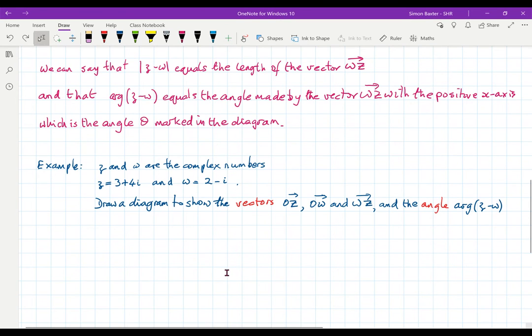Now let's have a look at this example. If I have two complex numbers Z and W where I take Z to be 3 plus 4i and W to be 2 minus i, I want to draw a diagram to show the vectors OZ, OW and WZ and the angle arg Z minus W.